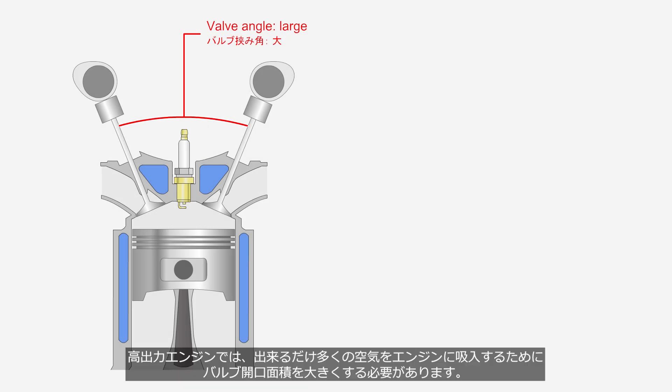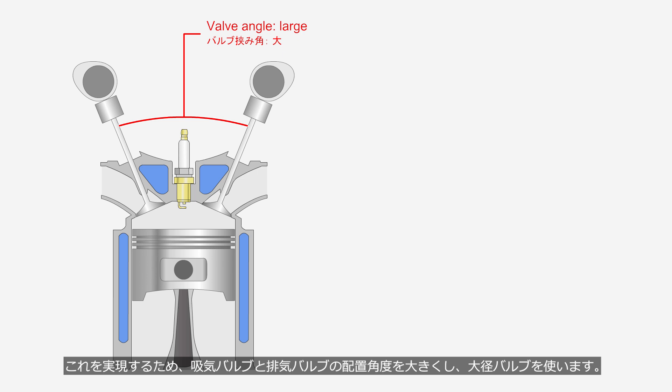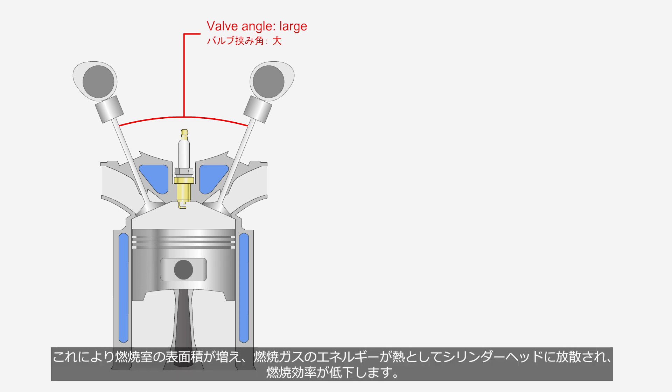In high-power engines, it's necessary to enlarge the valve opening area as much as possible in order to intake more air into the engine. To achieve this, the intake and exhaust valves are arranged at a wider angle and larger diameter valves are used. As a result, the surface area of the combustion chamber increases, causing the energy from the combustion gases to dissipate as heat into the cylinder head, which reduces combustion efficiency.